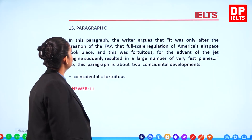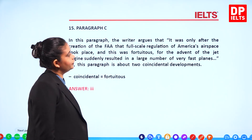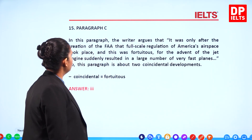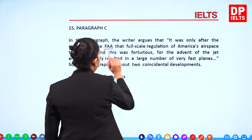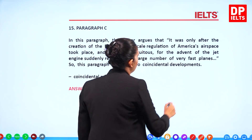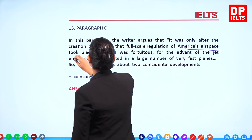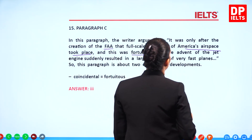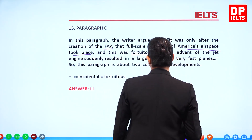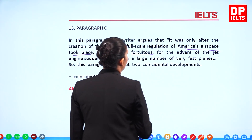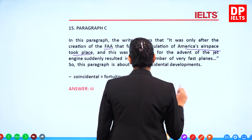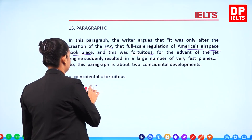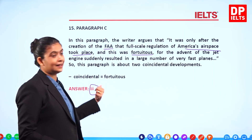Question 15: In this paragraph, the writer argues that it was only after the creation of the FAA that full-scale regulation of America's airspace took place, and this was fortuitous — because the advent of the jet engine suddenly resulted in a large number of very fast planes. So this paragraph is about two coincident developments. 'Fortuitous' means coincidental, and therefore the answer is 3.